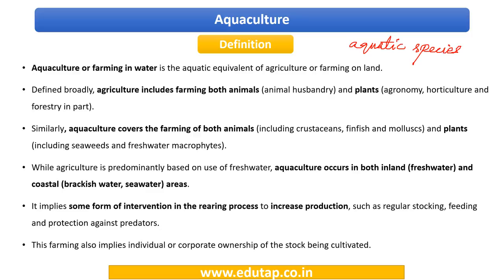There is a variety of environments that can be chosen from. The next important point is that when we talk about culturing an organism, we mean there is some form of intervention in the rearing process. This intervention in the rearing process has the ultimate aim of increasing production. For example, we take utmost care in protecting the species against predators, we ensure regular stocking, we provide them with supplementary feeds — all these things are done to increase production. There is a human intervention involved in the entire process.